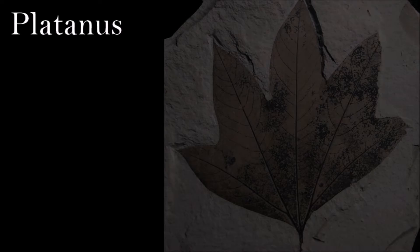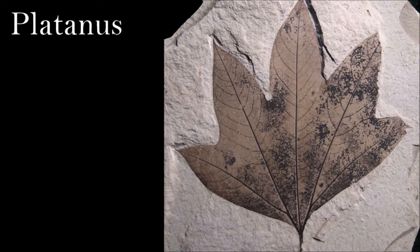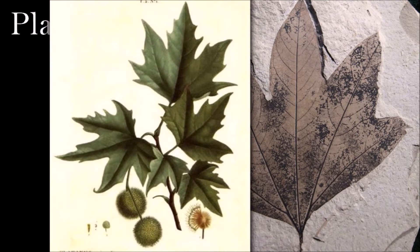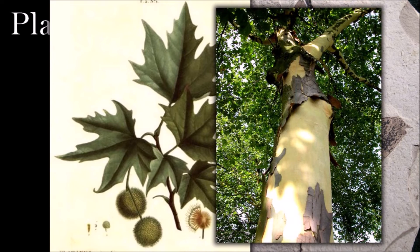Most of the information on the early fossil history of the Platanaceae family comes from fossil leaves. The earliest come from the Cretaceous of Europe and North America, but they are far more common in the Paleogene and Neogene of Europe, Asia, and North America. Many of the leaves have leaf venation patterns and flower structures that exclude them from Platanus and refer them to other genera, such as Macginitiea.